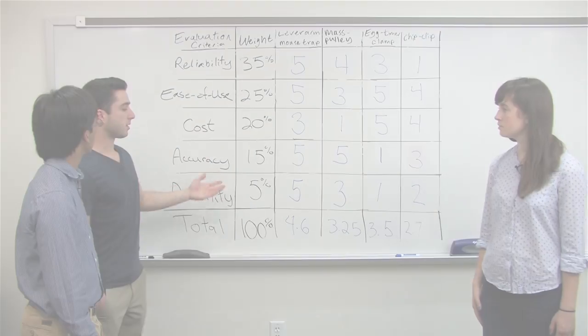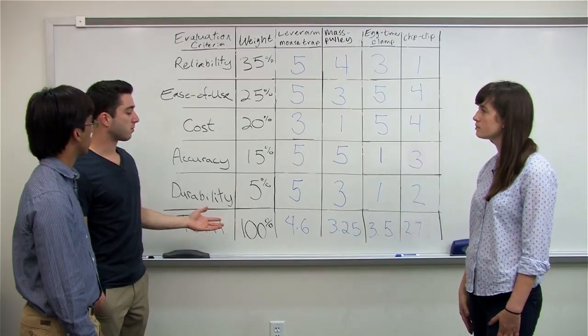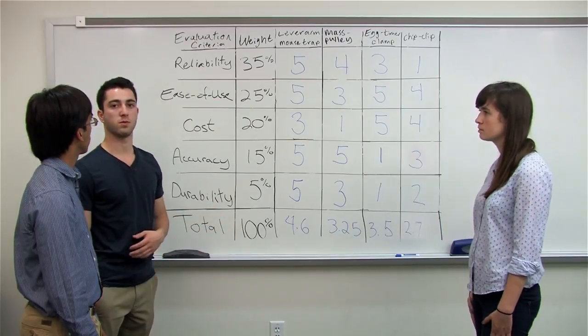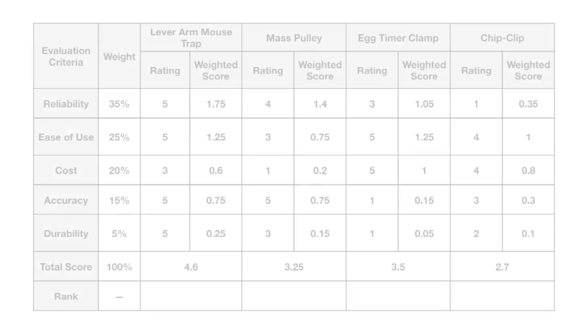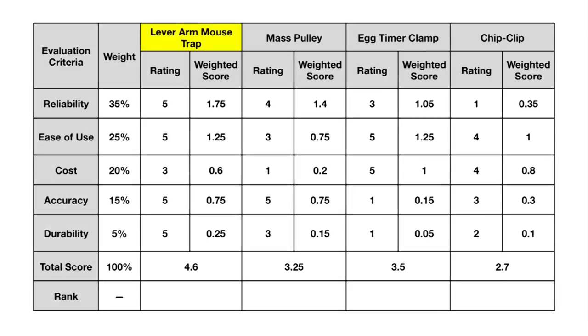So now that you've assigned scores and some of the weighted totals at the bottom, we can go ahead and reflect back on our results. As you can see, the lever arm and mousetrap scored the highest in our scoring matrix, and we can go back and see why. It's because it received the highest scores in our most important categories. So it received fives in both the top two most important criteria, and a three in the cost.